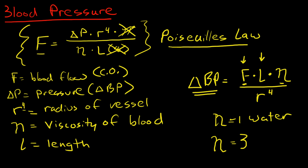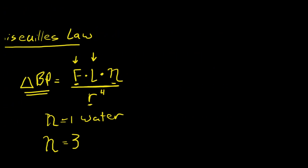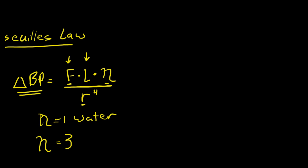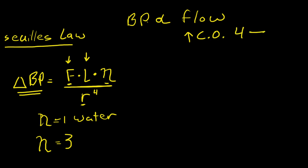And then we have this all divided by the radius to the fourth power. So what does this mean clinically? Blood pressure is directly proportional to flow on a one-to-one basis. So if you increase cardiac output from 4 to 8 — a 100% increase in cardiac output — you are going to have an equivalent increase in blood pressure. The same thing is true for length.